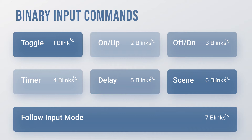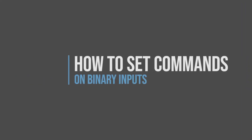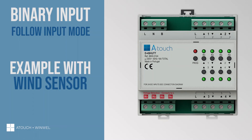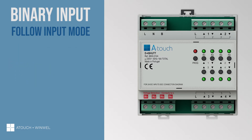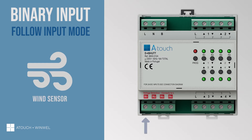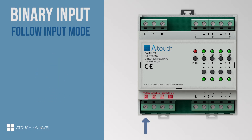In the next part, let's see an example of how to set the binary input. We'll see how to set a wind sensor to close the awning automatically to avoid damage, and also to return to the previous position after the wind event. Connect the wind sensor to one of the binary inputs and follow these steps to assign it to the output where the awning is connected.